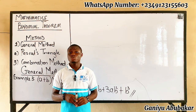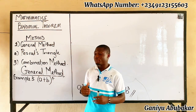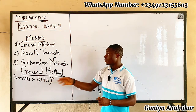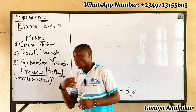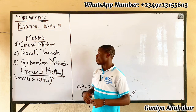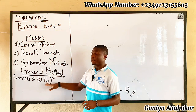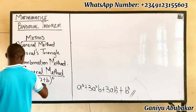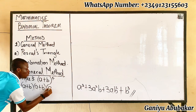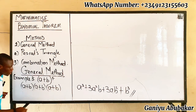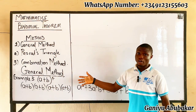Welcome back. Let's do the last example to further understand the in-depth concept behind the general method. We're looking at (a + b)⁴, which means a plus b written in four places: (a + b) × (a + b) × (a + b) × (a + b).